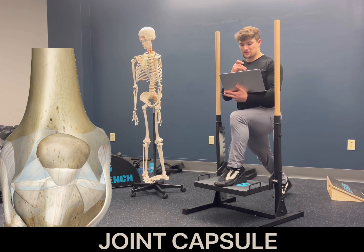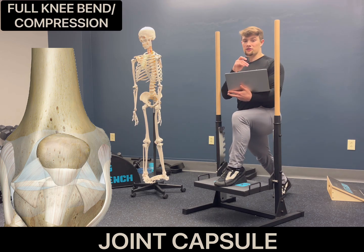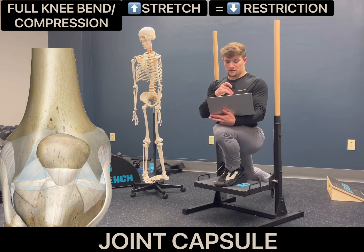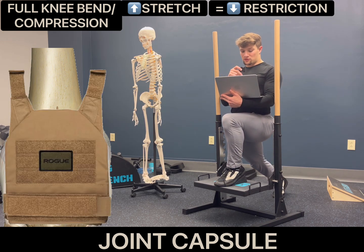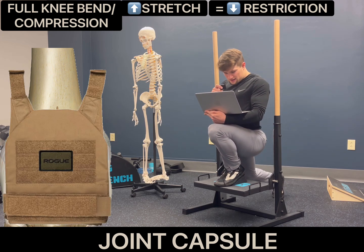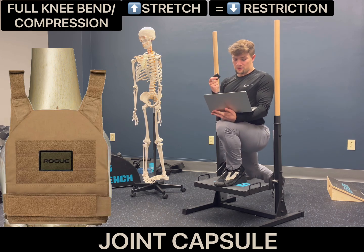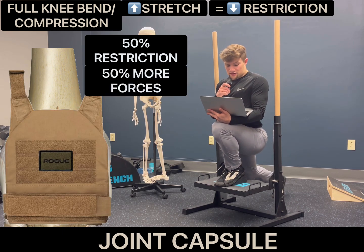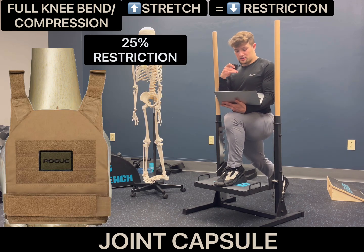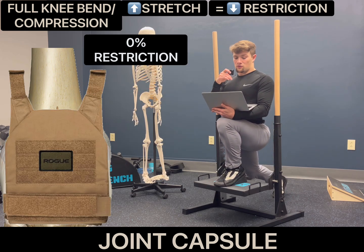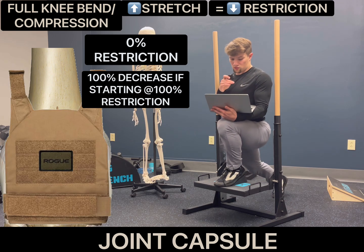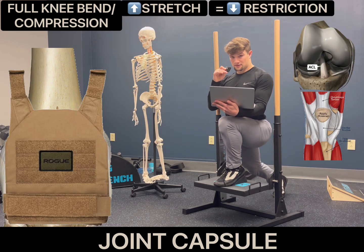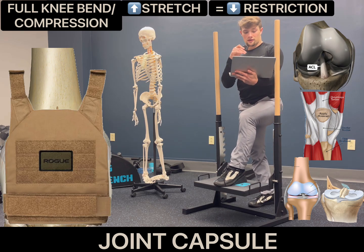The joint capsule encapsulates both the meniscus and the articular cartilage. A full knee bend creates the compressive effect for those structures, but for the joint capsule in particular it also stretches and alleviates restriction of the capsule surrounding them. Think of it like a tight vest on your knees — if your joint capsule is immensely restricted, every single step and bend is magnified. If you have 50% joint capsule restriction, that's 50% more forces on your knee structures. The more you alleviate joint capsule restriction, the more normal the tension will be on your ligaments, tendons, and cartilage. This same principle applies to the shoulder.